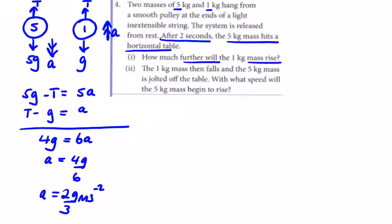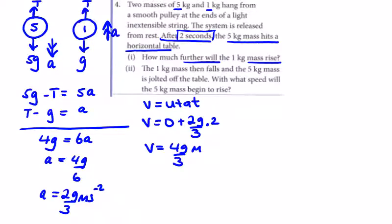Now we can get the common speed using v = u + at. Just as the 5 kg mass hits the table, v = 0 + (2g/3)(2) = 4g/3 m/s.